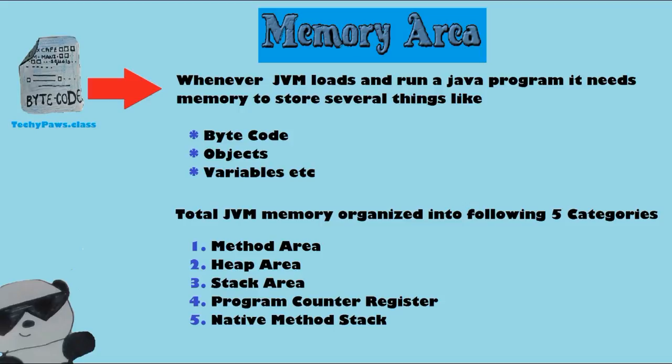In the method area, class-level binary data including static variables are saved. For every JVM, one method area is created at JVM startup. It can be accessed by multiple threads simultaneously but is not thread-safe. The method area is also not a continuous memory space.